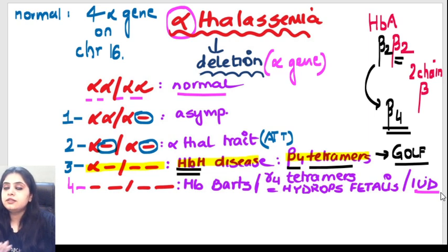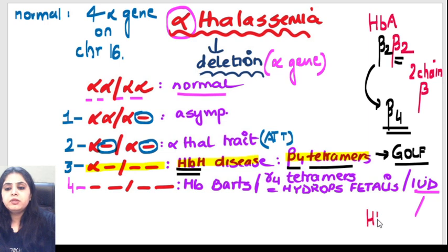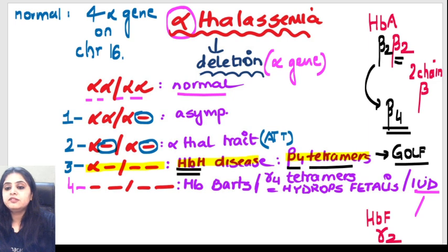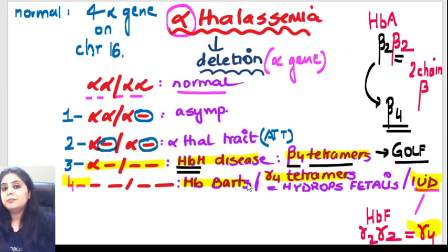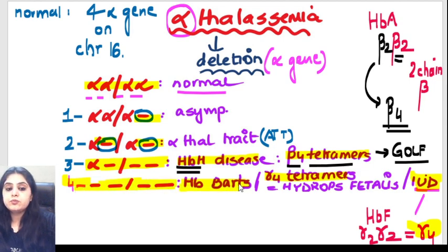When all four alpha genes are deleted, the child is not going to survive - it's an intrauterine death, not compatible with life. At the stage of fetal hemoglobin, which is normally alpha-2 gamma-2, there are no alpha chains available. So gamma will combine with itself, forming gamma-4 tetramers. That is known as Hb Barts. So: four genes deleted = Hb Barts, with gamma-4 tetramers formed in fetal life.